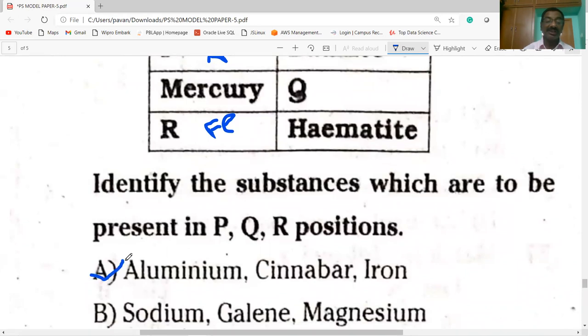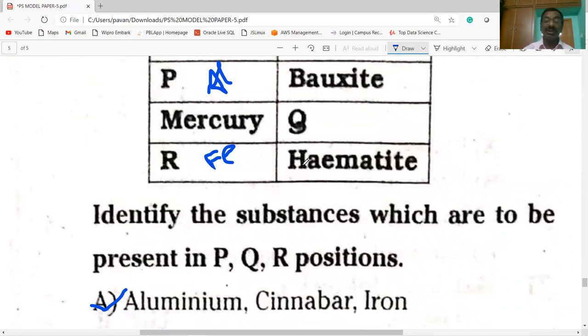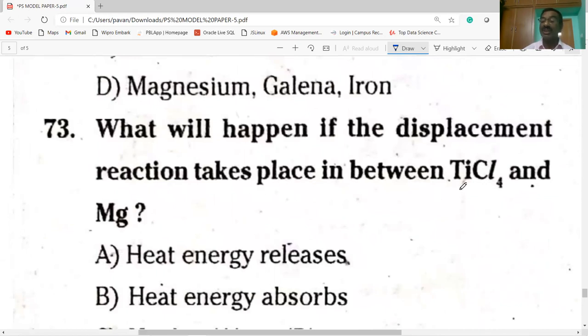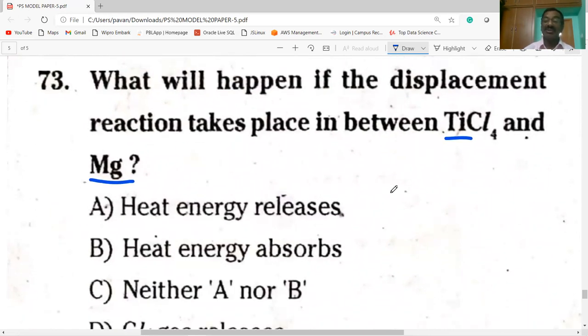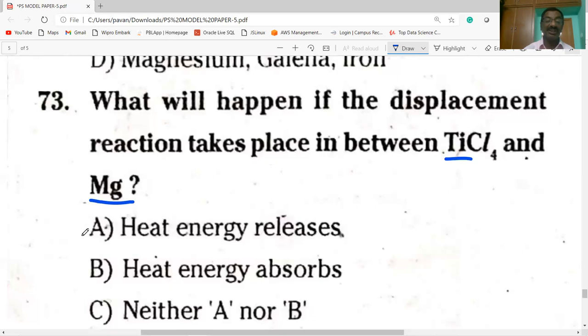What will happen if the displacement reaction takes place between TiCl4 and magnesium? Magnesium is highly reactive metal. Highly reactive metal displaces titanium from titanium tetrachloride. It is a displacement reaction. Heat energy releases, not absorbed, nor chlorine gas releases. So heat energy releases. The displacement reaction between highly reactive metal and salt of low reactive metal is exothermic reaction. Heat energy releases, hence it is known as thermite reaction.